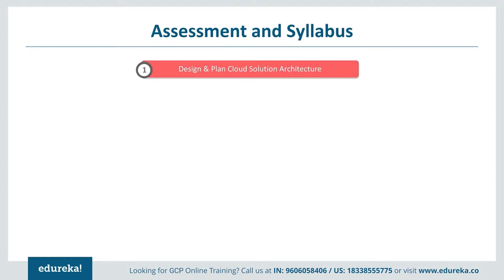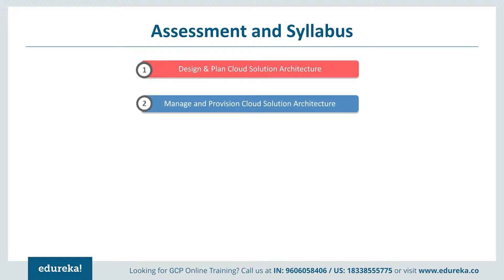The Cloud Architect syllabus begins with Section 1: Designing and Planning a Cloud Solution Architecture. Candidates should be able to design a solution infrastructure that meets business and technical requirements, covering topics such as business use cases, product strategies, cost optimization, application design, integrations, and trade-offs. This also includes designing network, storage, and computing resources, integration of on-premises with multi-cloud environments, identification of data storage needs, storage system mapping, and data flow diagrams.